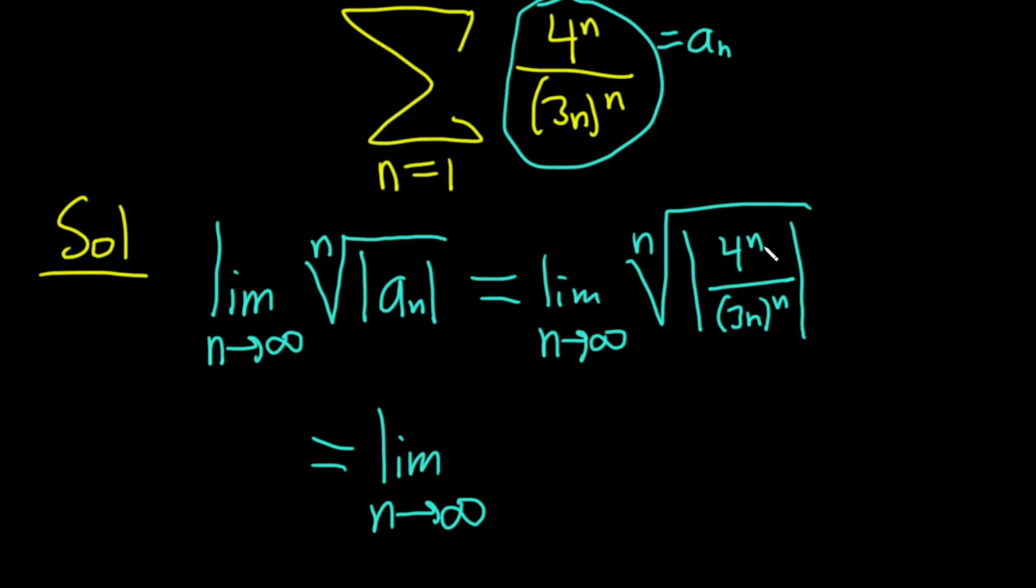And then let's also rewrite this fraction. Let's write it as (4/3n)^n. And then we still have the nth root out here. So we drop the absolute value and combine this fraction. And now you can clearly see that the nth root and the nth power cancel.